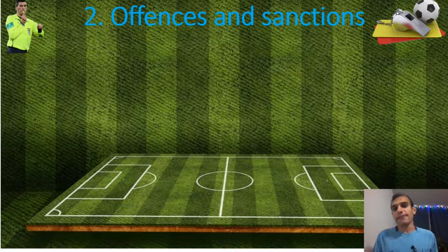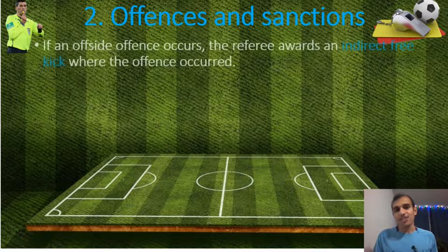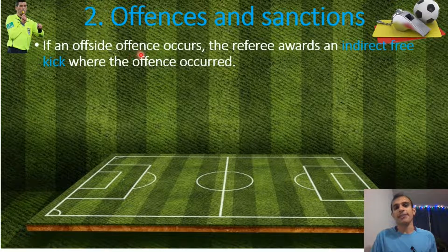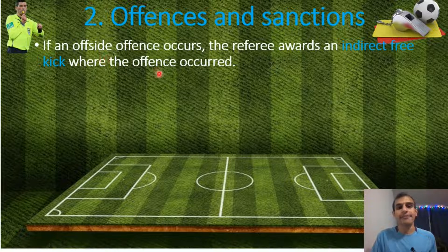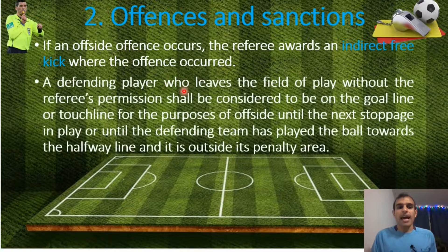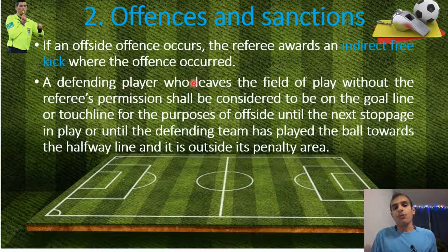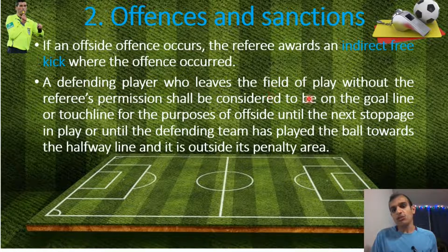Number two: offenses and sanctions. If an offside offense occurs, the referee awards an indirect free kick where the offense occurred. Also, when a defending player leaves the field of play without the referee's permission, they shall be considered to be on the goal line or touch line.